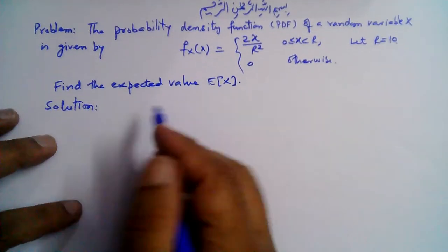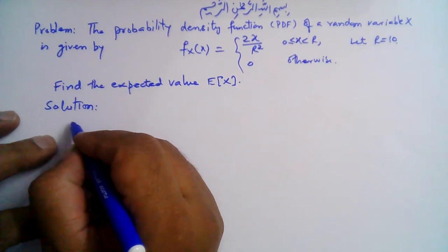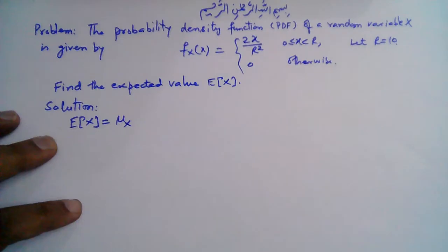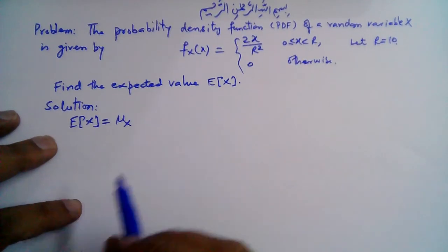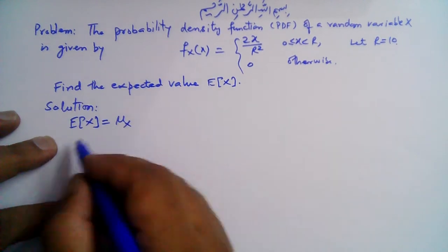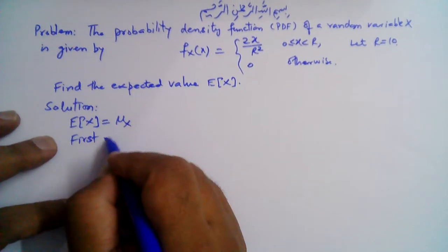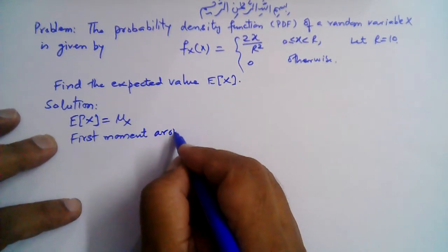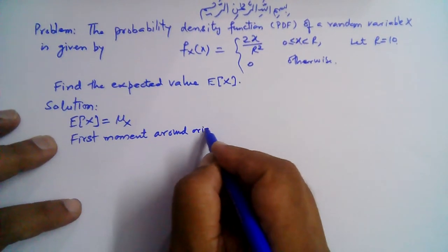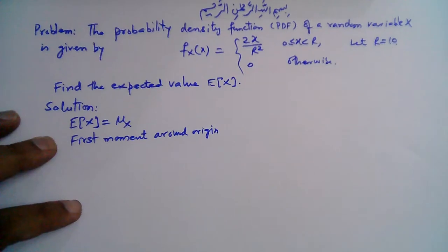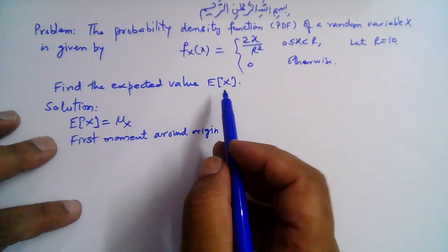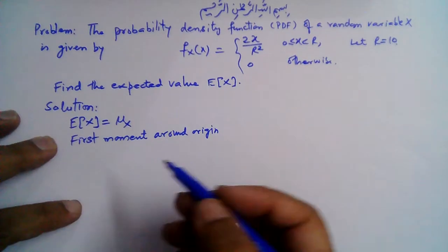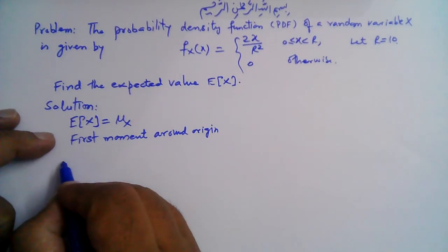The expected value of x is also known as the mean value of x, denoted E[x], and this is also the first moment around the origin. The second moment around the origin is the expected value of x squared, and the nth moment is the expected value of x raised to the power n.